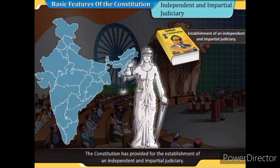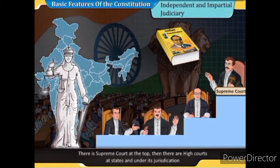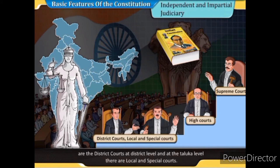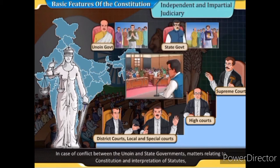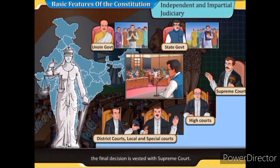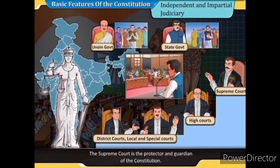The Constitution has provided for the establishment of an independent and impartial judiciary. There is the Supreme Court at the top, then High Courts at the state level, District Courts at the district level, and local and special courts at the taluka level. The judgments of the Supreme Court are binding on all subordinate courts. In cases of conflict between union and state governments, and matters relating to the Constitution, the final decision is vested with the Supreme Court, which is the protector and guardian of the Constitution.